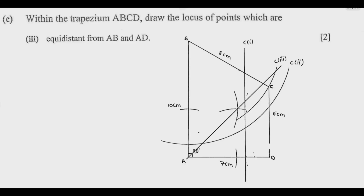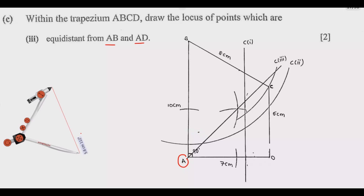Now look at part 3 of C — equidistant from AB and AD. What is common is point A. Standing at A, we have AD in one direction and AB in another direction. We need to find points where these distances are equal. Get the compass, extend it enough so that from point A you can make arcs on both AD and AB. Without changing the distance, make intersecting arcs. Then use the ruler to join the intersection point through A — all points on that line are equidistant from AD and AB.